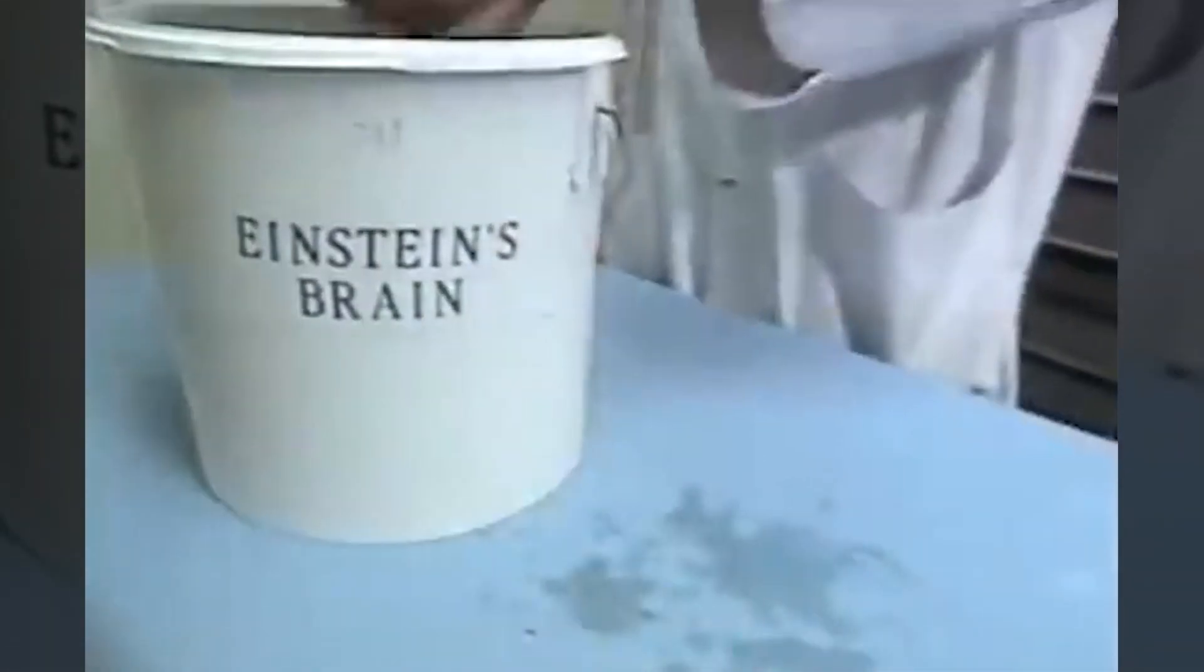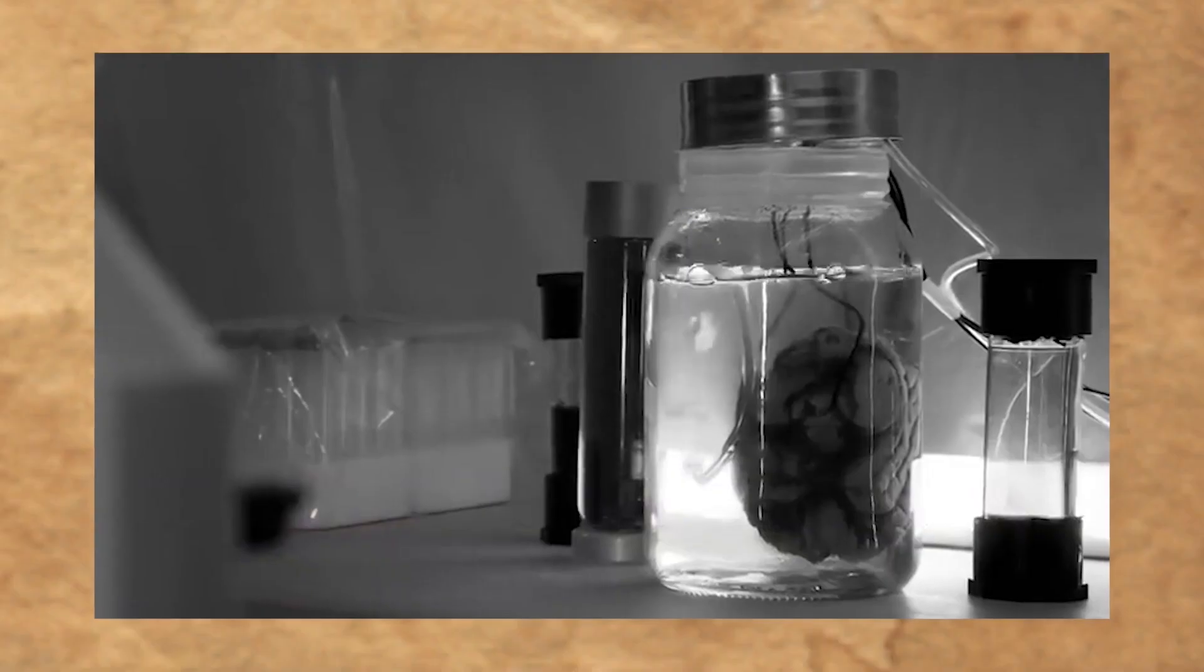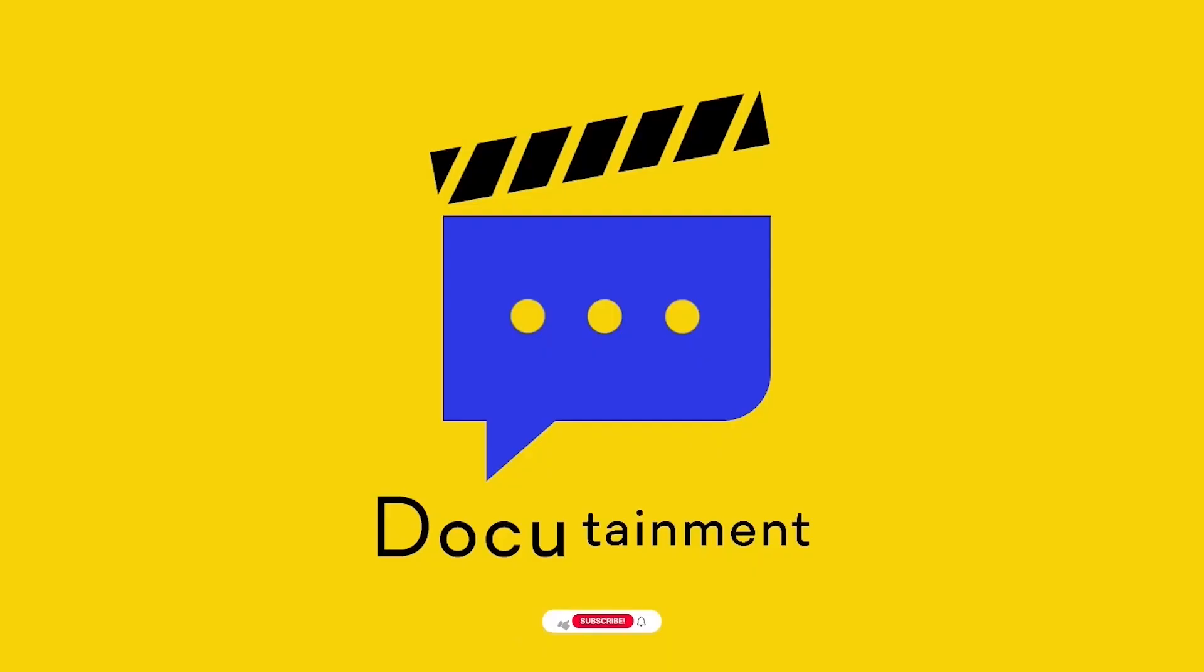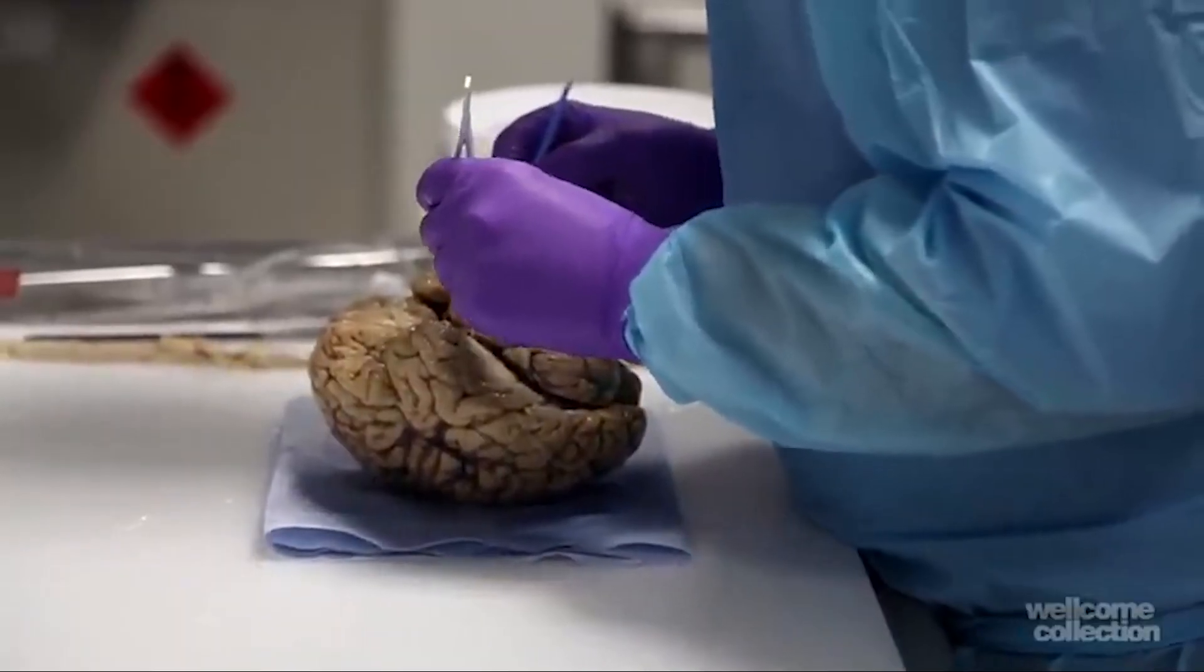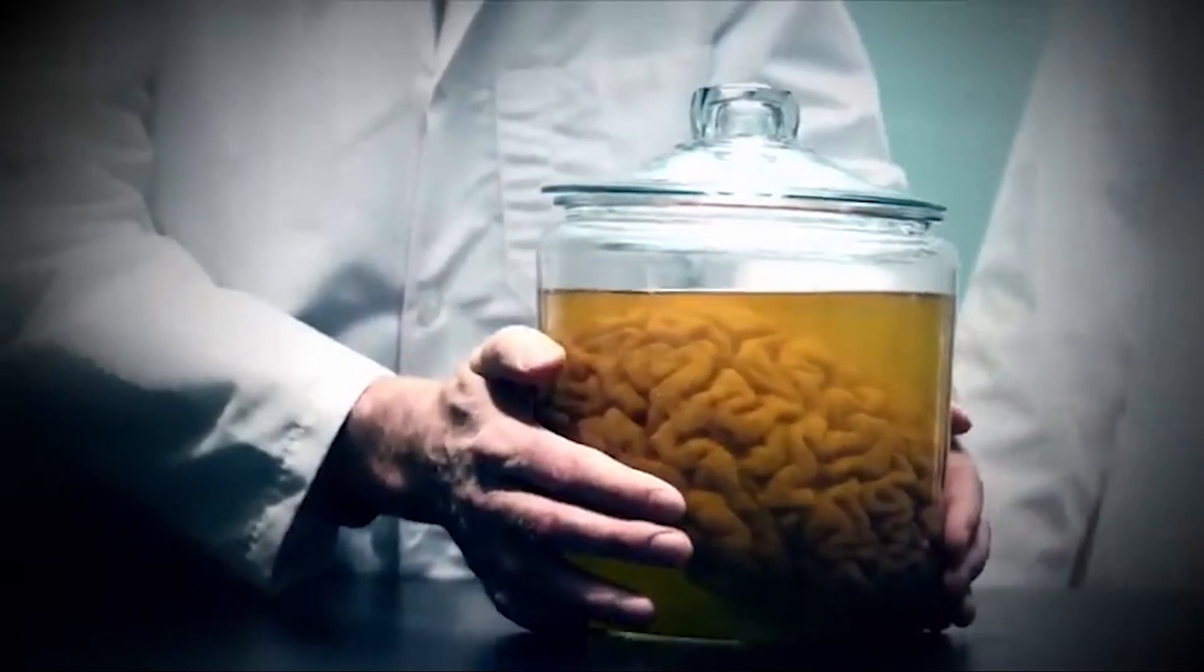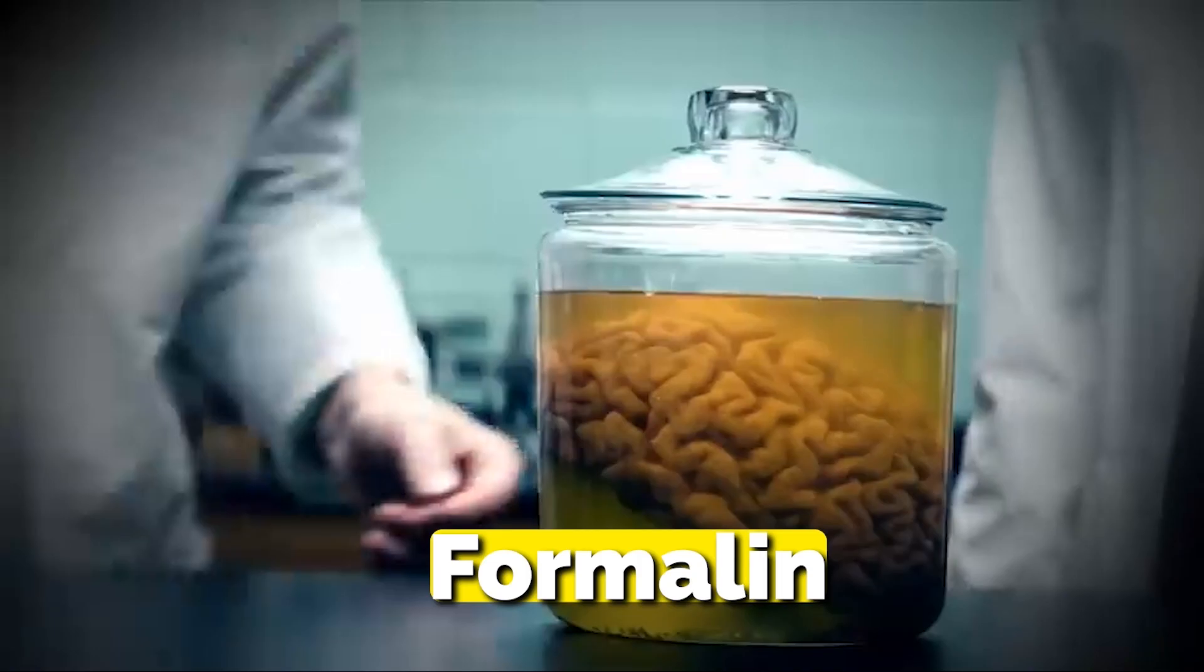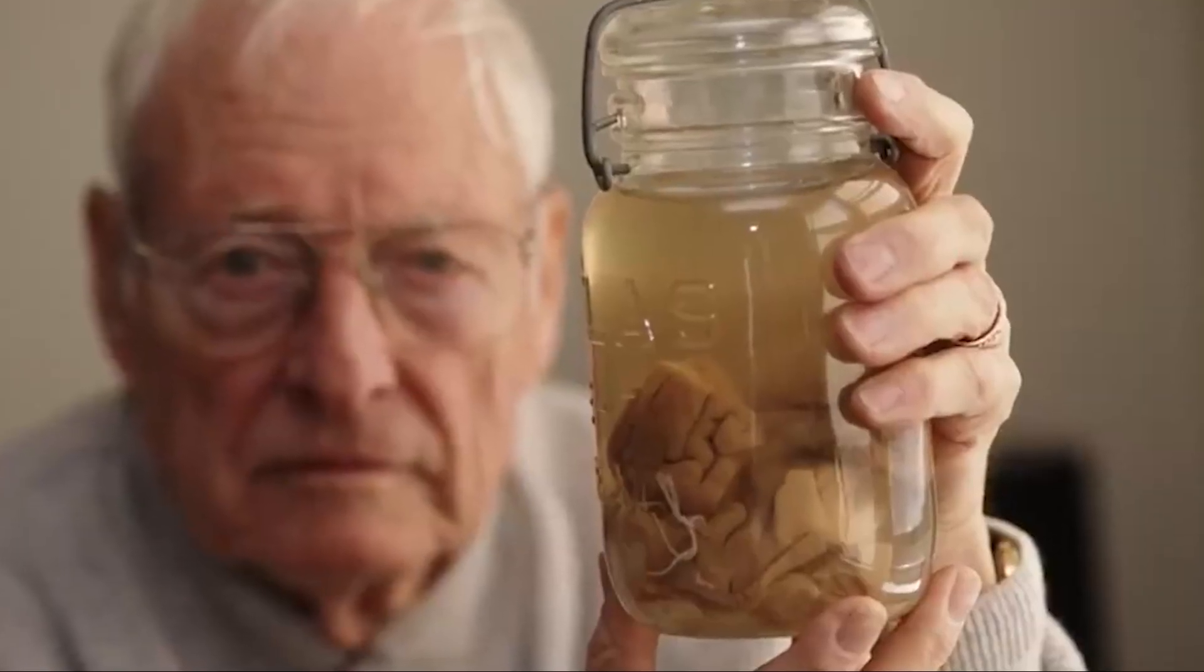This was no ordinary brain. It held the key to understanding Einstein himself. Welcome back to another fascinating documentary video. With great care, Harvey preserved Einstein's brain in liquid called formalin, which would keep it intact for years to come.